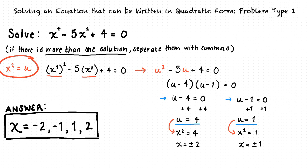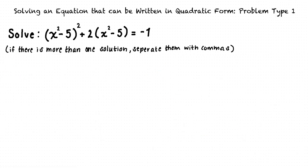Let's try another problem. We are asked to solve the quantity x squared minus 5, squared, plus 2 times the quantity of x squared minus 5, equals negative 1. Again, if there is more than one solution, we will separate them with commas. To start, we will once again have to transform this equation into one that is in quadratic form.